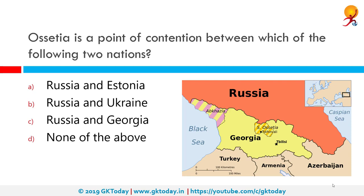Ossetia is a point of contention between which two nations? The correct answer is Russia and Georgia. Ossetia is an ethno-linguistic region located on both sides of the Greater Caucasus Mountains, largely inhabited by Ossetians. The Ossetian language is part of the eastern Iranian branch of the Indo-European language family. The Ossetian-speaking area south of the main Caucasus ridge is recognized by most countries as within Georgia but under the control of the Russian-backed de facto government of the Republic of South Ossetia. The northern portion consists of the Republic of North Ossetia-Alania within the Russian Federation.